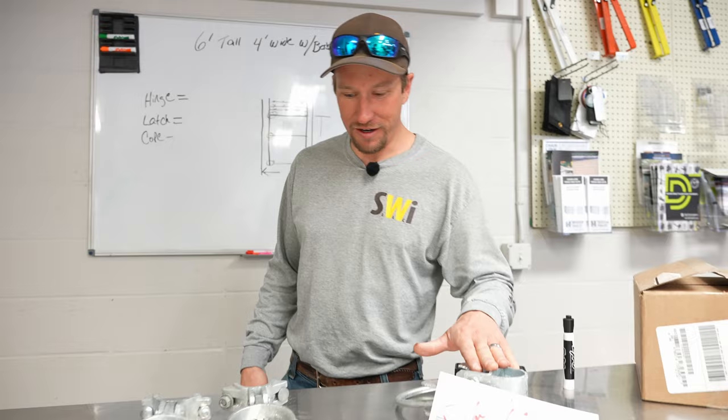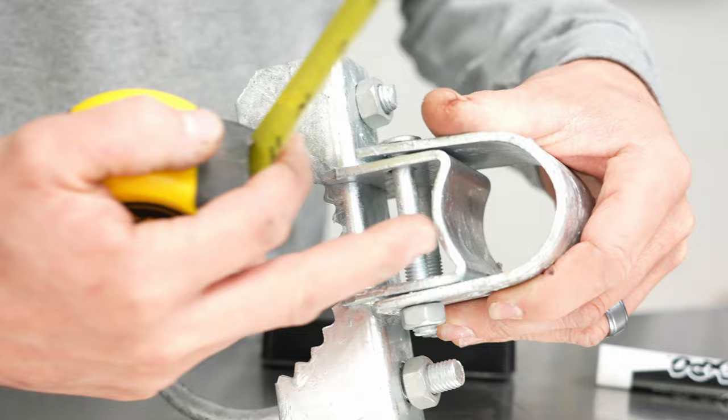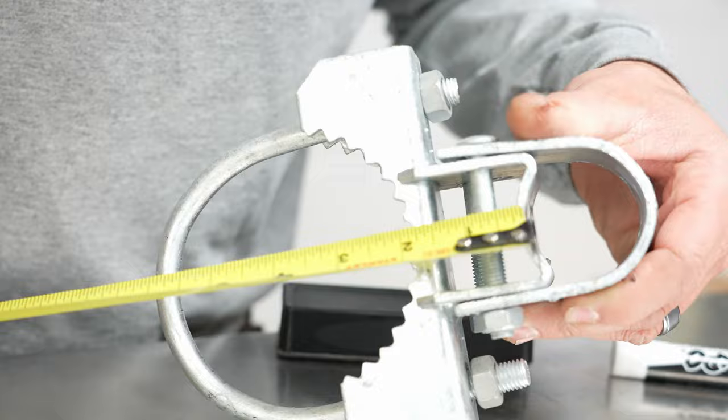Okay, so before we can get to building our gate, we have to do a little bit of math. What we need to do is figure out how much we need to take off for our hinge and for our latch. Let's start with the hinge - from here to here, that's where the post sits and that's where the edge of the gate frame is. That is two inches.